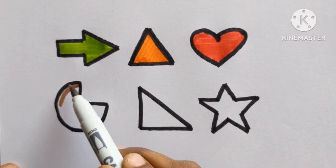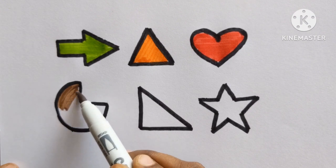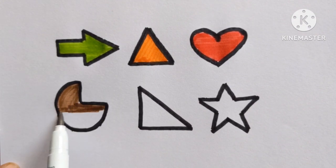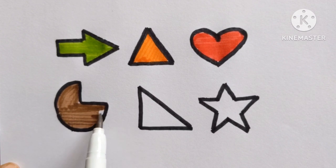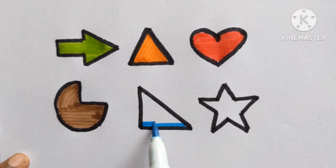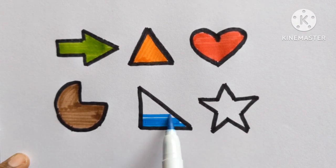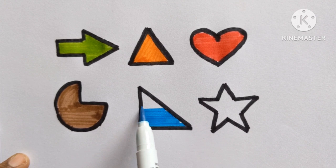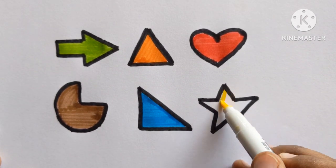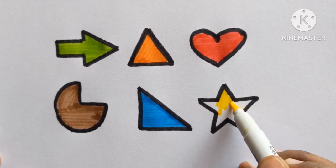Pie. Brown color. Right angle triangle. Sky blue color. Tick tock, tick tock. Blue color. Star. Yellow color.